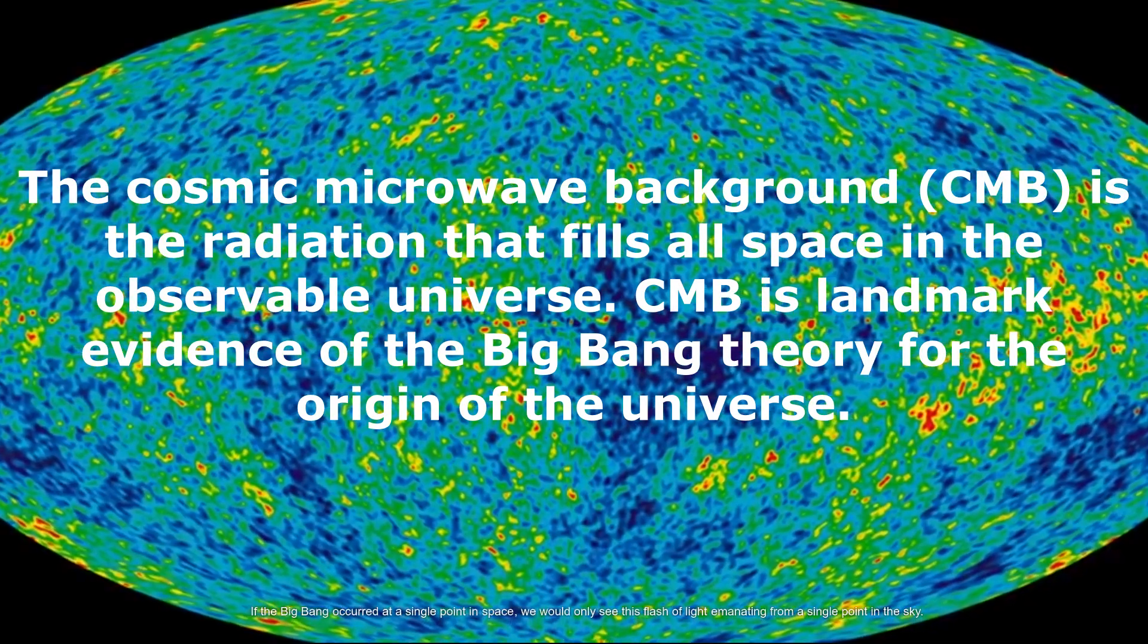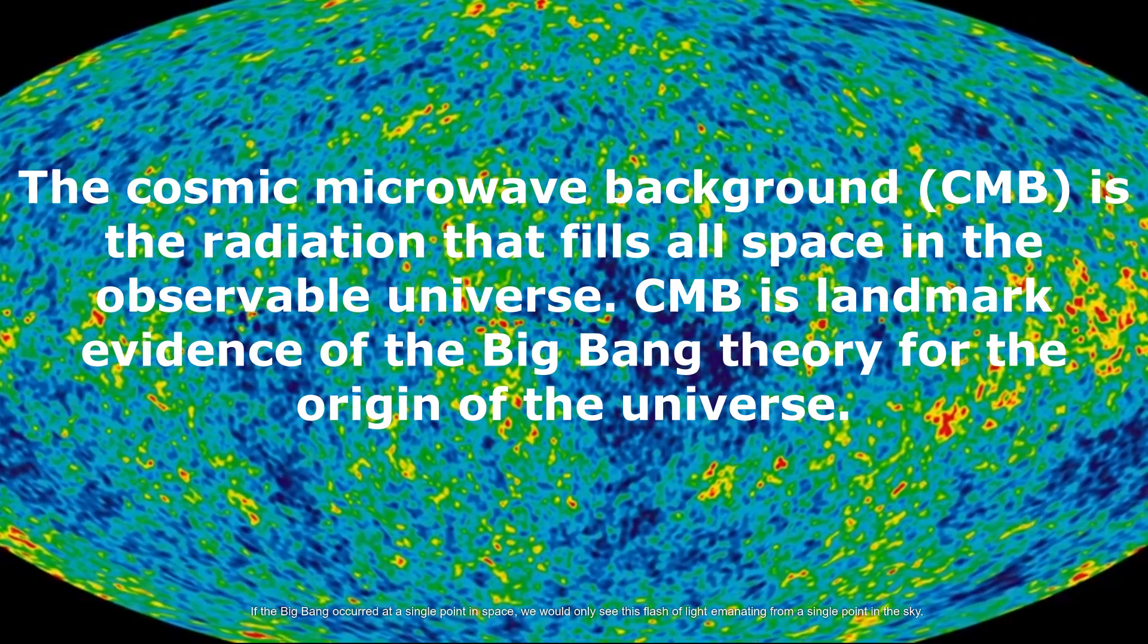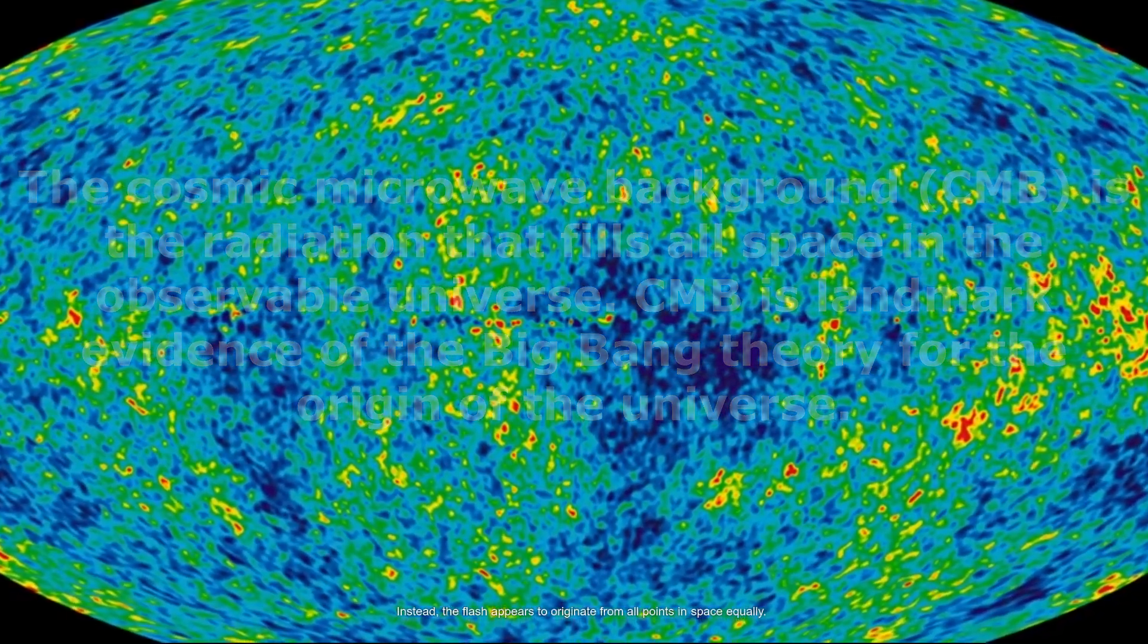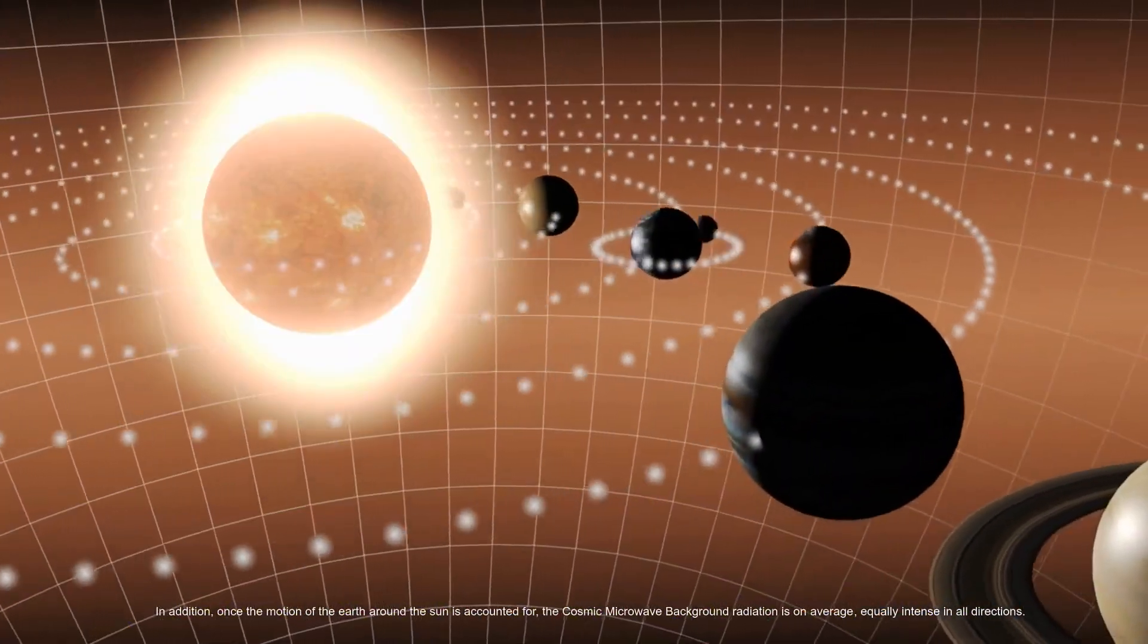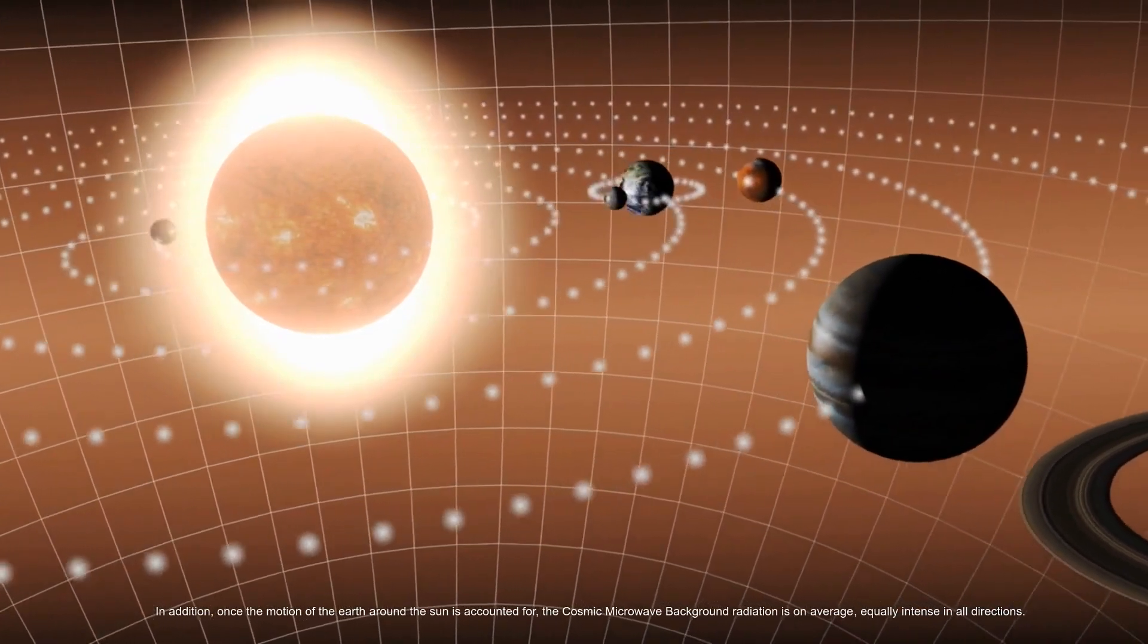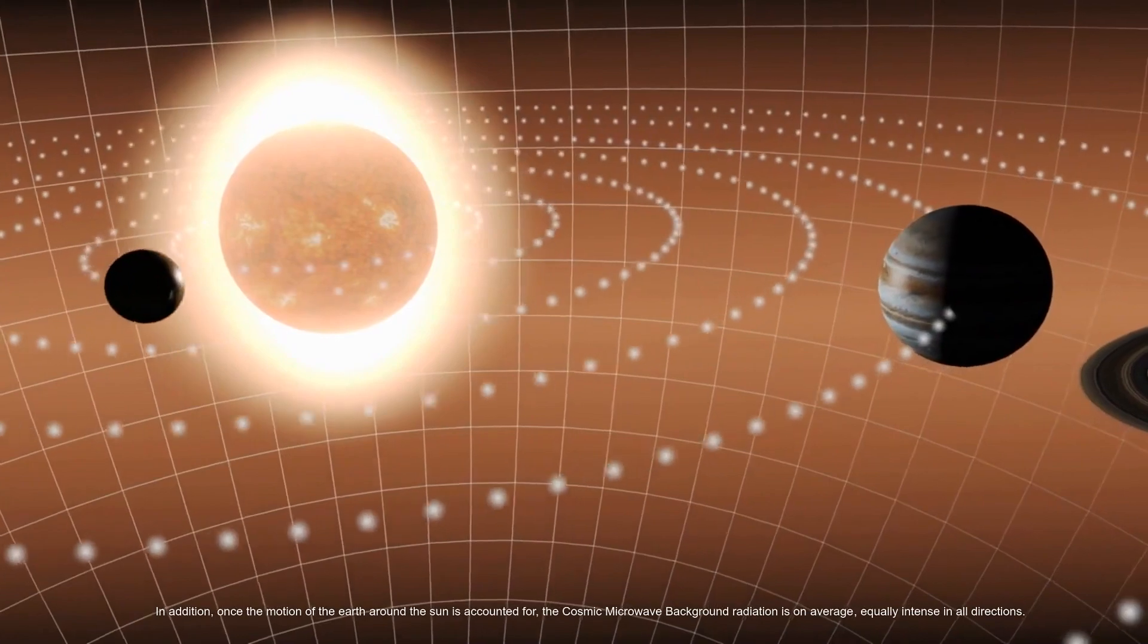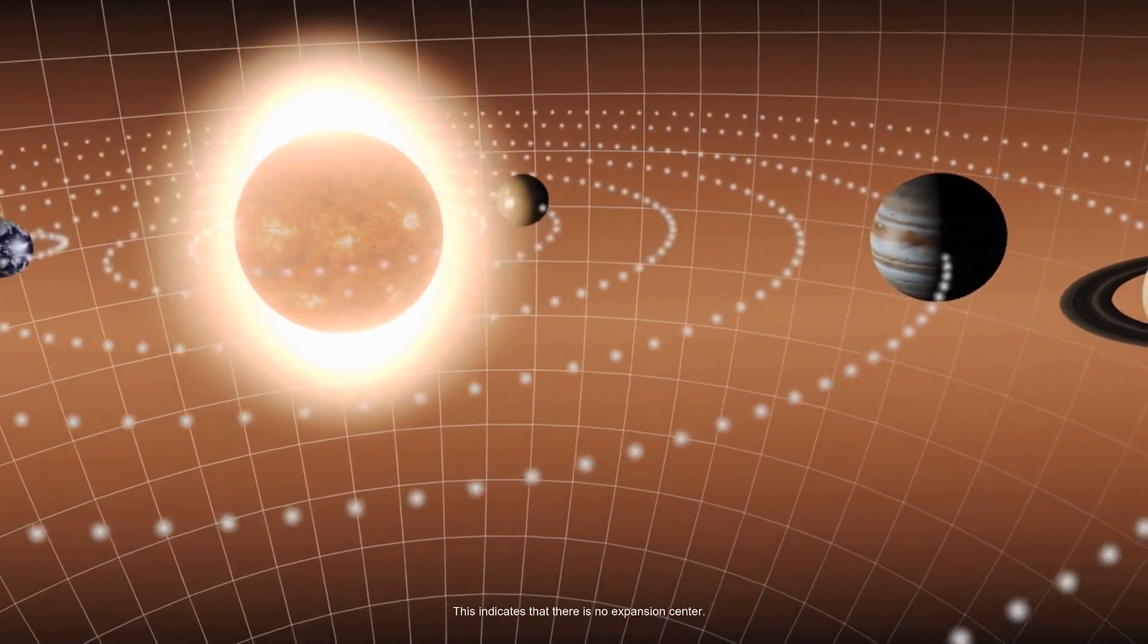If the Big Bang occurred at a single point in space, we would only see this flash of light emanating from a single point in the sky. Instead, the flash appears to originate from all points in space equally. In addition, once the motion of the Earth around the Sun is accounted for, the cosmic microwave background radiation is on average equally intense in all directions. This indicates that there is no expansion center.